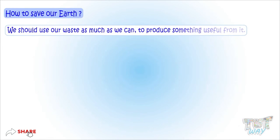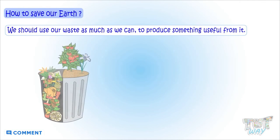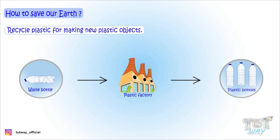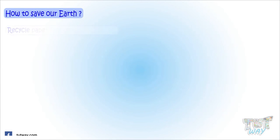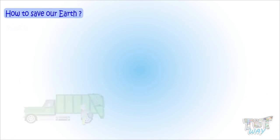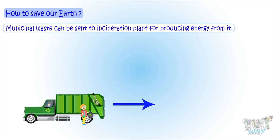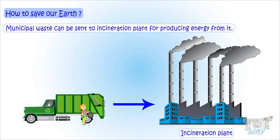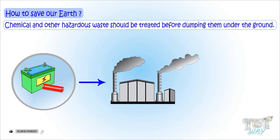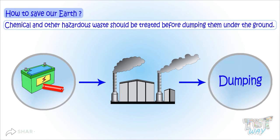We should use our waste as much as possible to produce something useful, like compost and biogas from biodegradable waste. Recycle plastic to make new plastic objects and recycle paper to make new paper. Municipal waste can be sent to incineration plants that produce energy from waste. Chemicals and other hazardous waste should be treated before being dumped in the ground.